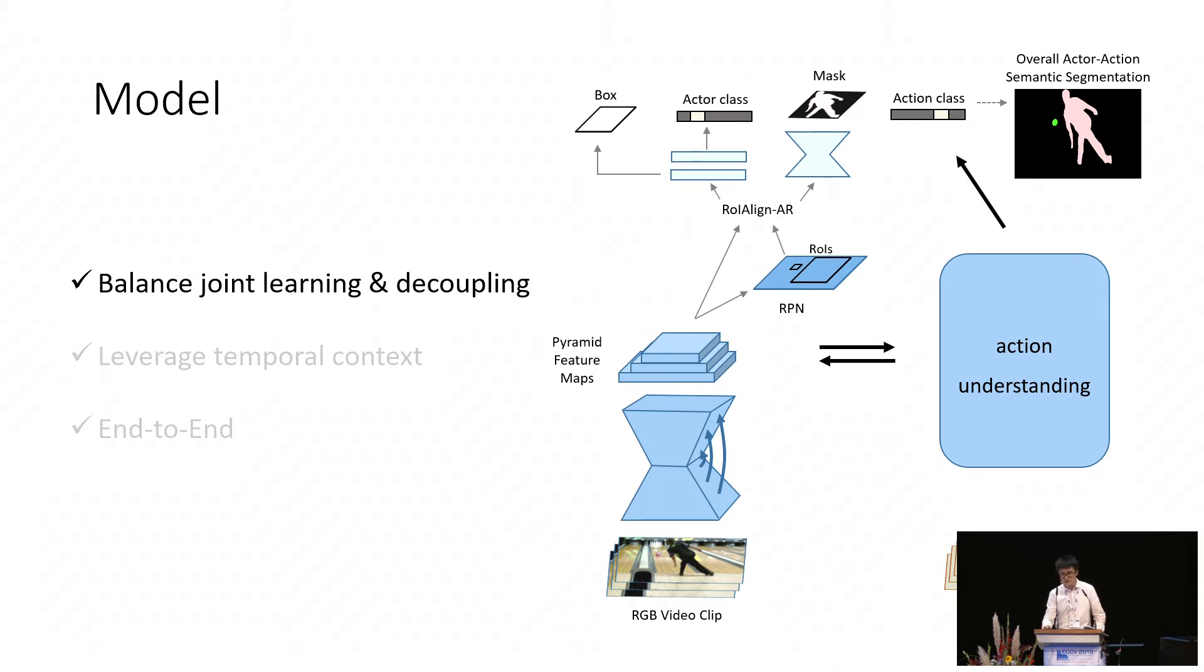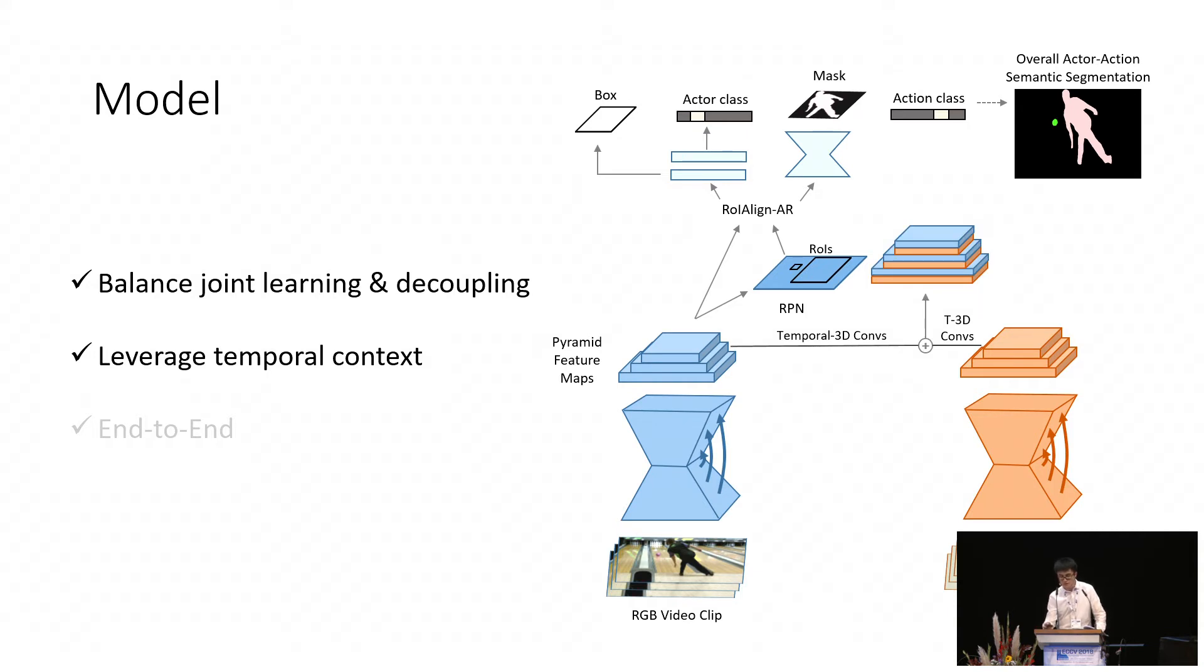However, we still need to recognize the action they are performing. Our key design goal for the action recognition task is to leverage temporal context. We achieve this in two ways. First, we use the optical flow as a local motion cue. Second, we aggregate the temporal information across multiple frames. The flow is fed into a feature extractor to generate pyramid feature maps. And then a temporal 3D convolutional operation will be performed on the pyramid feature maps from both streams. The aligned fused feature maps are used to predict action labels for each mask. With this architecture design, we actually meet our third goal. We have an end-to-end differentiable architecture where the parameters can be jointly trained and some tasks can benefit from each other.